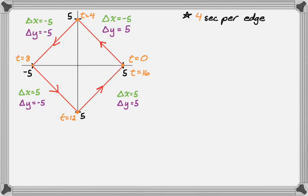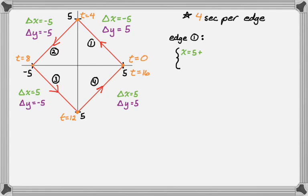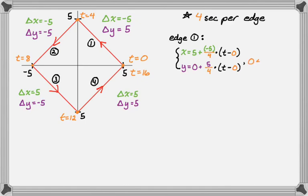From here I can write equations for each edge. Edge one goes from t equals zero to t equals four. x equals five plus (delta x over delta t) times (t minus 0), so x equals 5 + (−5/4)(t − 0). y equals zero plus (5/4)(t − 0). You'll see a lot of five-fourths here. The time interval includes both endpoints: 0 ≤ t ≤ 4.